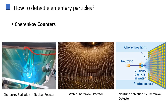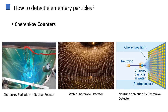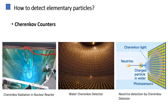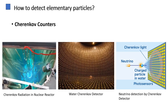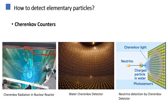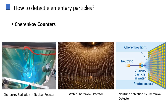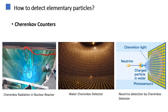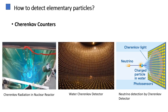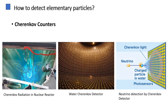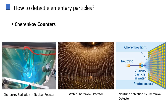Cherenkov counters, named after physicist Pavel Alexeyevich Cherenkov, leverage the intriguing Cherenkov radiation phenomenon. As charged particles move through a transparent medium at speeds surpassing the phase velocity of light in that medium, but not exceeding the speed of light in a vacuum, they emit a distinct blue light. Cherenkov counters detect this phenomenon, aiding scientists in identifying and measuring particle velocities in high-energy physics experiments, providing valuable insights into the subatomic realm.